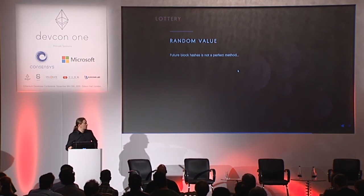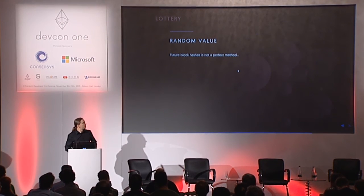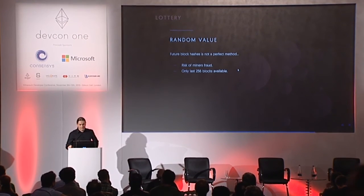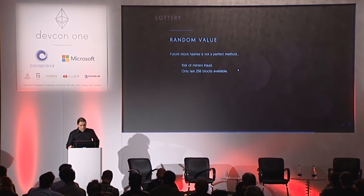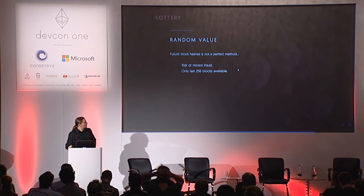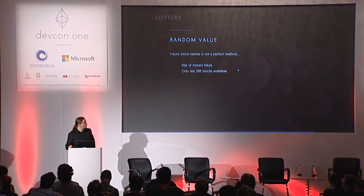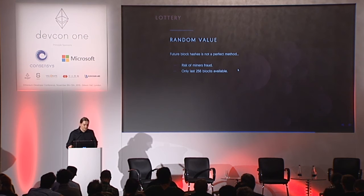One very important problem we have to deal with is how to generate a random value. Generating random values from future block hashes is not a perfect method because it is prone to miners' fraud. At the time of this presentation, only 256 blocks back can have their hashes available to the contract. So within 256 blocks, a block hash has to be stored in the contract because later on it cannot be verified. If that doesn't happen, then the next batch of 256 blocks is used and another hash is used. It's fair but it changes the winner, so there is an incentive for everyone to store that hash from the first 256 blocks.